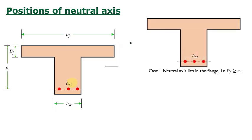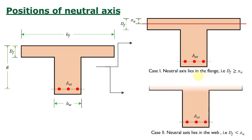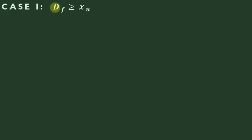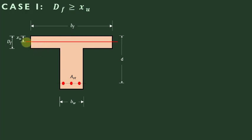The first possibility is that the neutral axis may lie in the flange — that is, the depth of flange is greater than or equal to the neutral axis depth. In the second possibility, the neutral axis may lie in the web. That is, Df is greater than or equal to Xu.